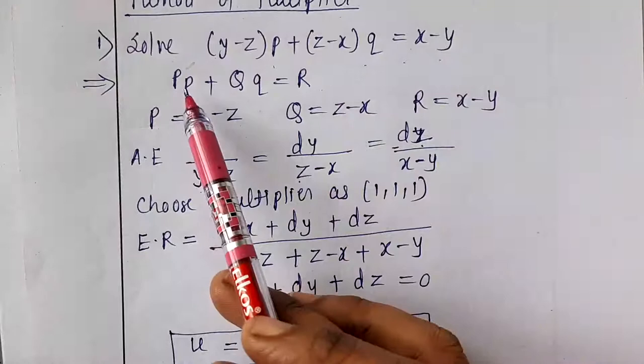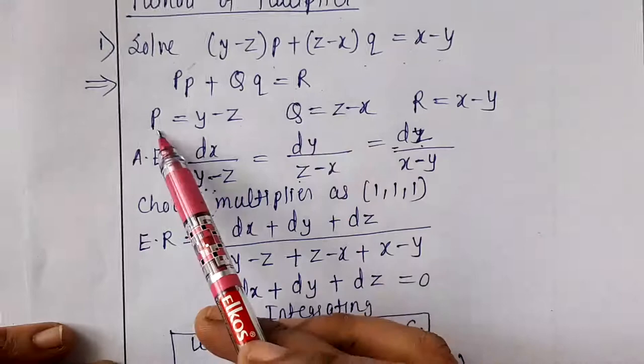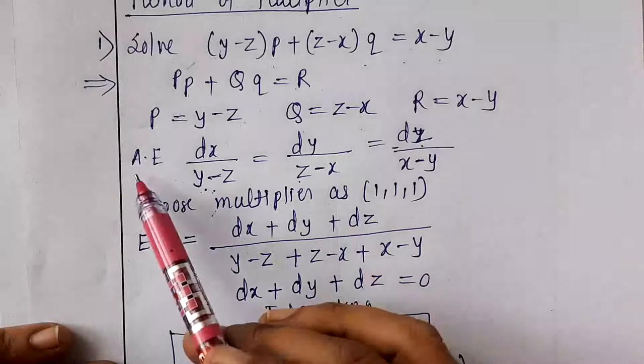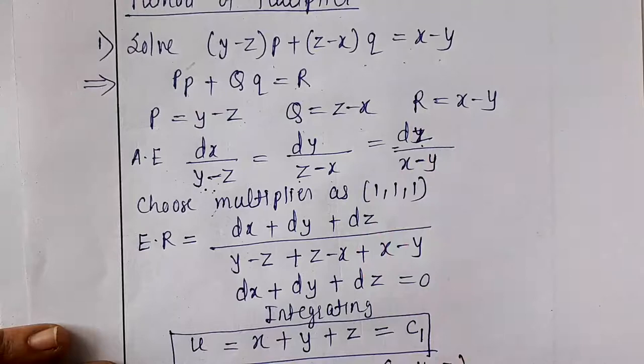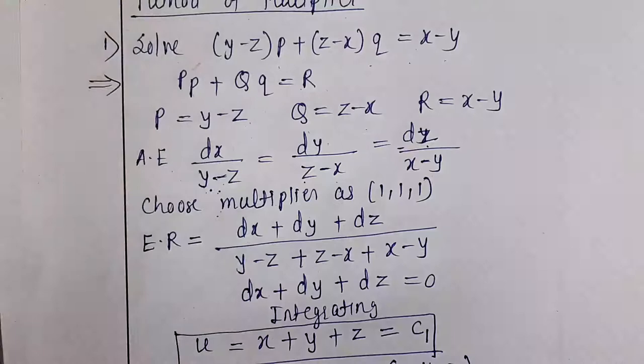First, write it in the form of Lagrange's equation, that is Pp + Qq = R. So P = y − z, Q = z − x, and R = x − y. The auxiliary equation is dx/P = dy/Q = dz/R.